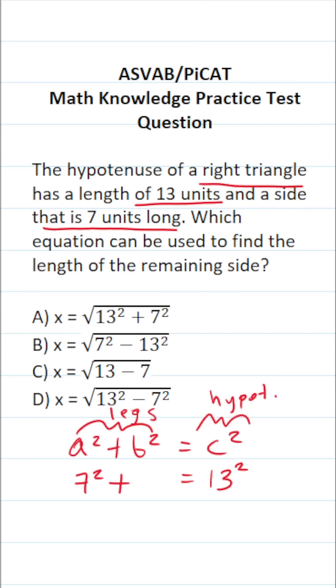That said, the other leg called b is unknown. Typically we represent unknown values in math with letter variables, so I'm going to call it x squared. In order to find the length of the missing side, it's going to be x. We're going to solve this equation for x.